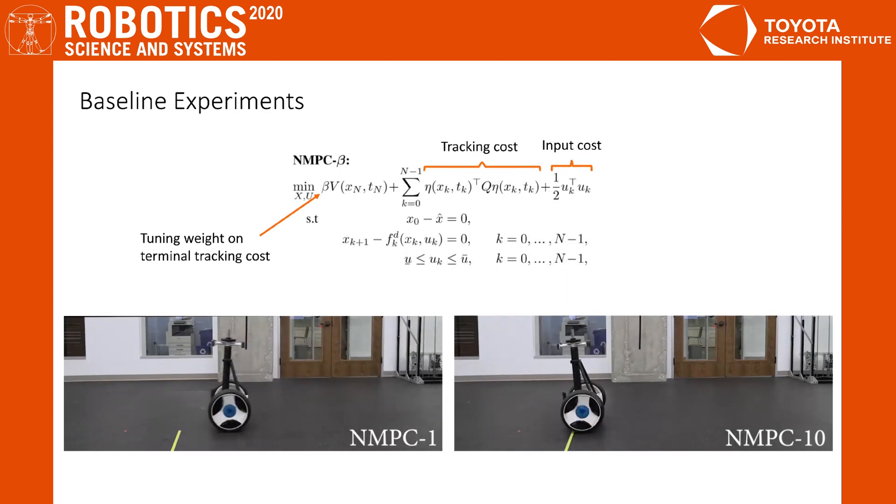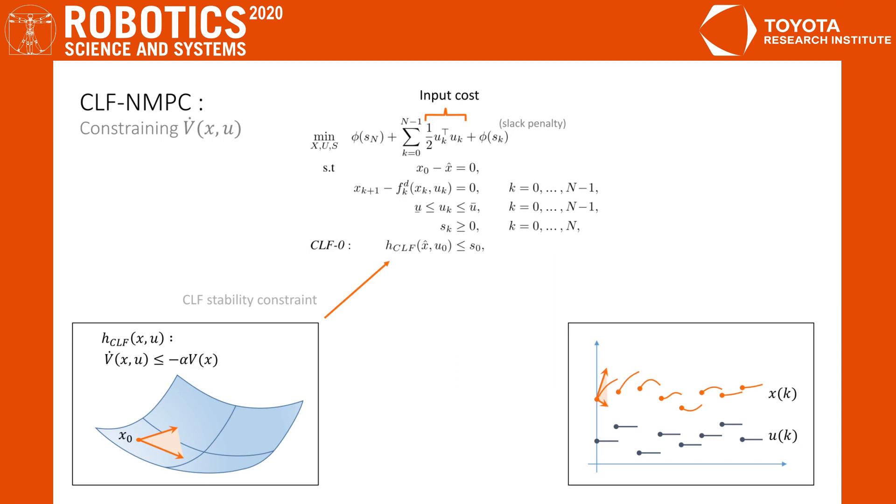So good performance is certainly possible with this formulation, but it is rather up to the user to find a suitable cost function. This now motivates our combined approach, where we seek to take the formal stability guarantees coming from the control Lyapunov function and add them to the optimization. As a first idea, one could take the CLF-QP formulation and instead of minimizing the input at a certain instant, penalize it along the entire horizon.